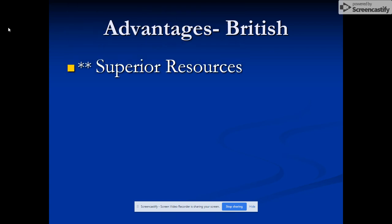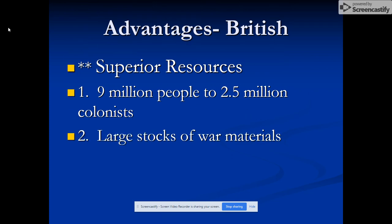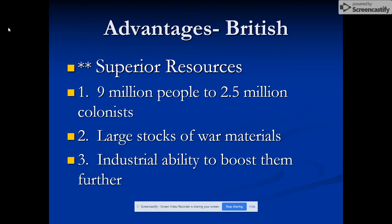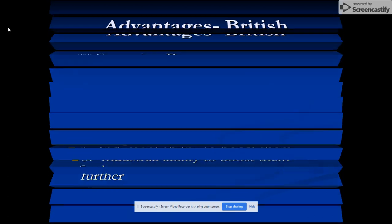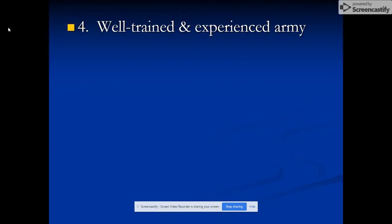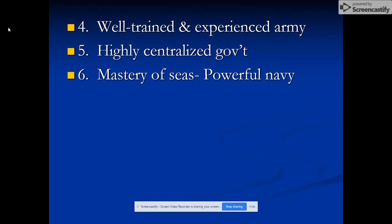The first British advantage is superior resources. They're the number one empire in the world at the time. They have 9 million people compared to the colonists' 2.5 million. They have a very large stock of war materials and the ability to produce even more. Remember, North America is still mostly agrarian — there's some shipbuilding in North Carolina and the New England colonies, actually for the British military as well. The British also had a well-trained and experienced army, a highly centralized government with a strict chain of command from the king down to the lowest soldiers, and a very powerful navy. They were masters of the seas.